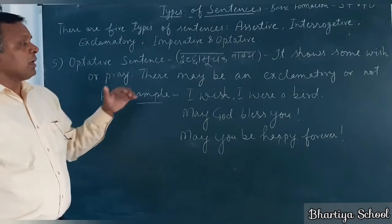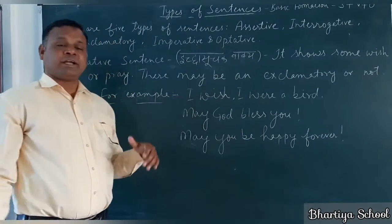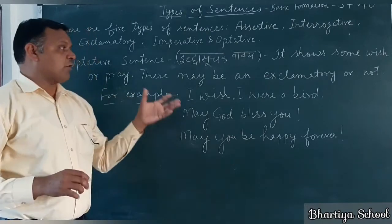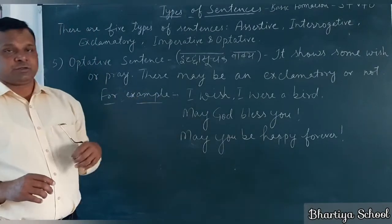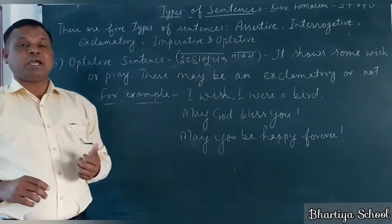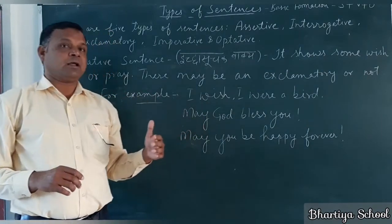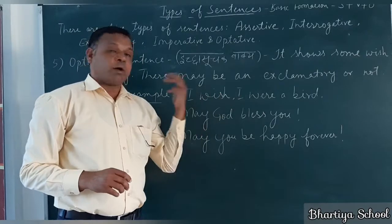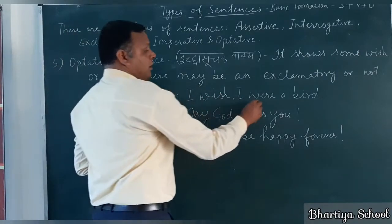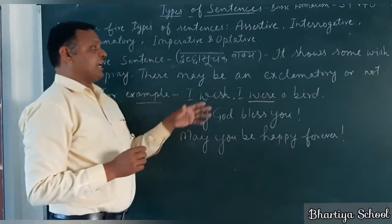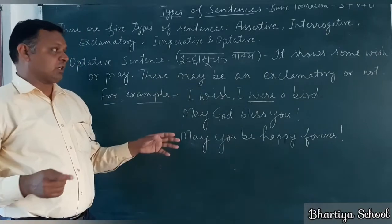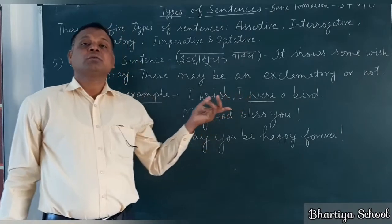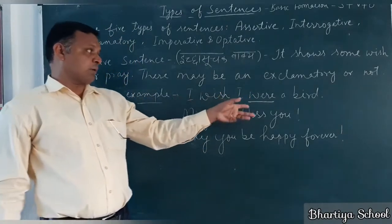For example: 'I wish I were a bird.' Here, a person is supposing and wishing. Notice that with 'I' in this sentence, the word 'were' is used — not 'was'. Normally 'was' comes with 'I', but here 'were' is used.